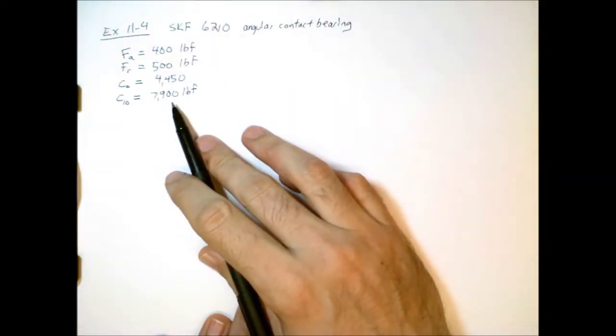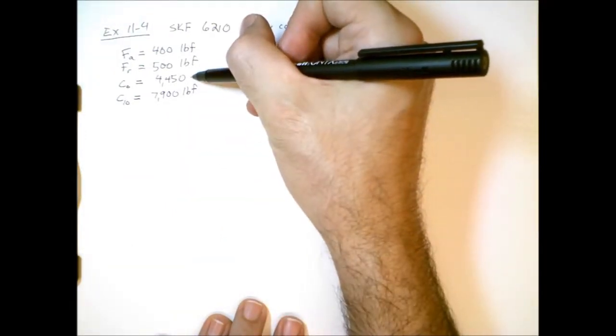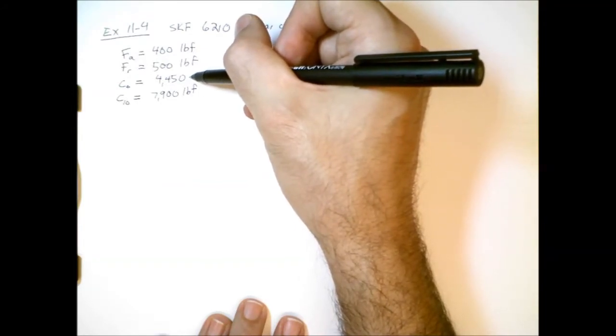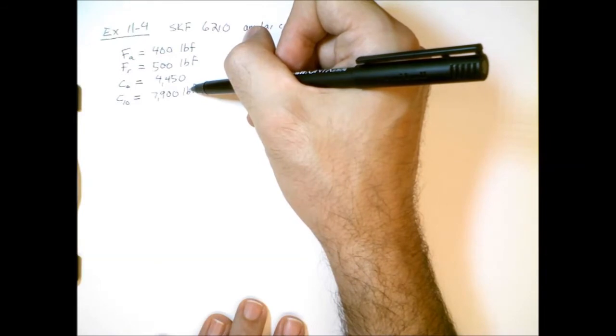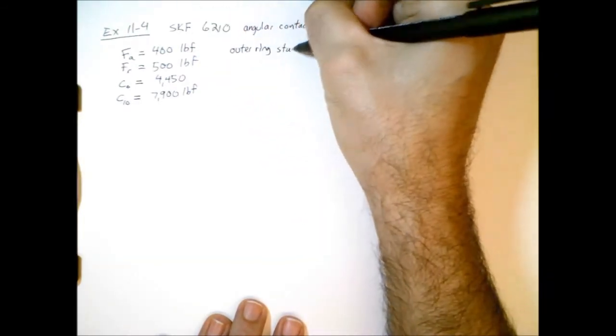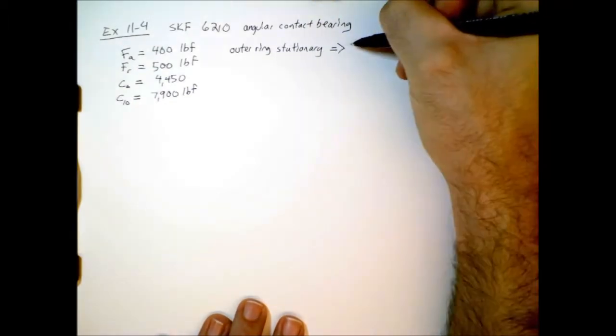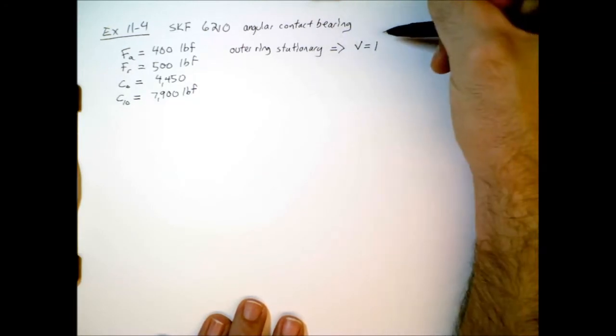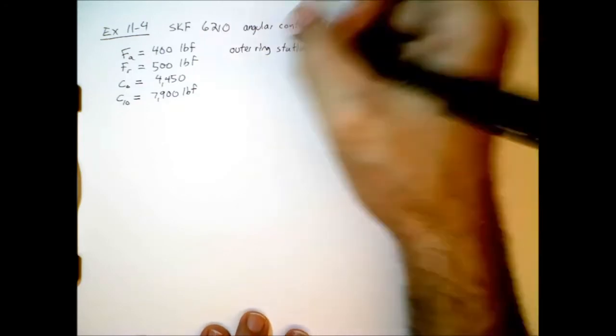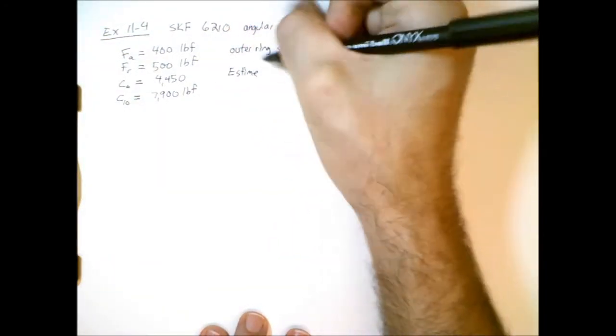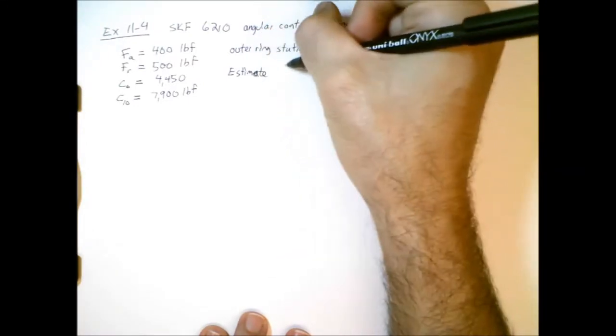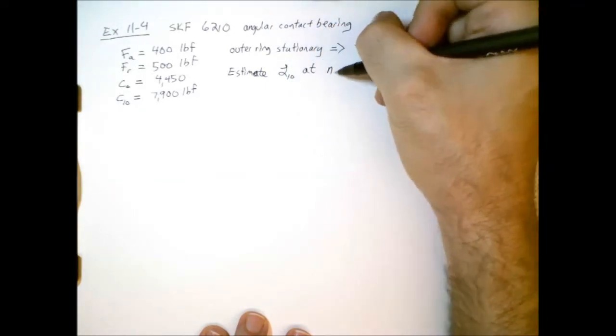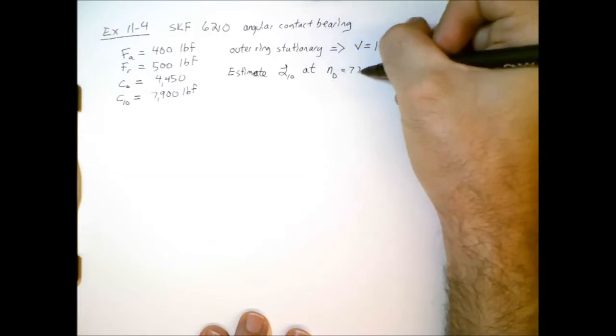So notice something interesting here, that when the bearing is not rotating, we can't handle that much force without sustaining permanent damage. This is smaller than the C10 rating. We're told that the outer ring is stationary, or in other words, the inner ring is rotating, so that means the rotation factor is 1. And our job is to estimate the life in hours, the L10 rating at 720 RPM.